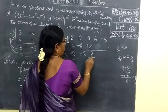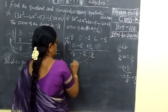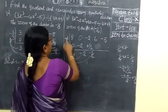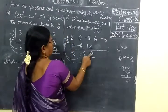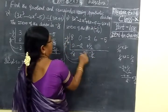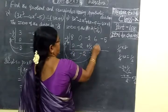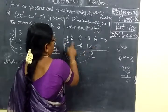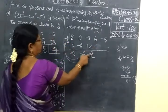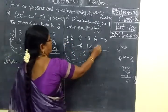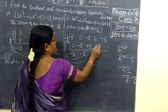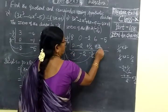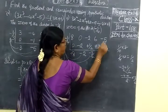Now again you multiply this and this. First minus into minus is plus. Minus into minus plus. Then numerator into numerator: 3. Then denominator into denominator: 8.